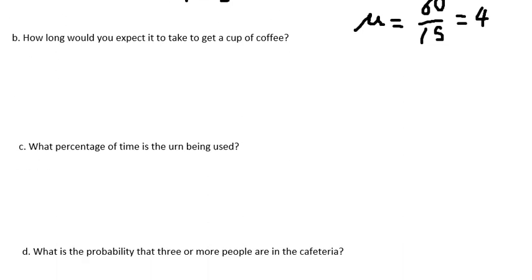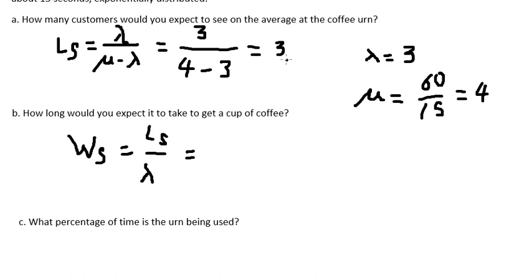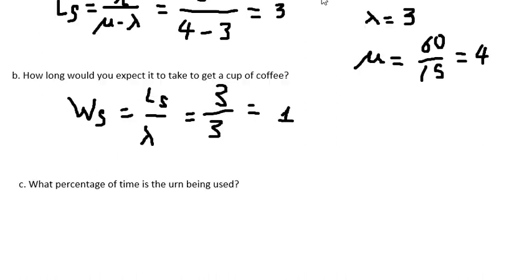Question B: how long would you expect it to take to get a cup of coffee? The formula is Wq equals Lq divided by lambda. Lq was calculated as 3, divided by lambda which is 3, giving us 1 minute.